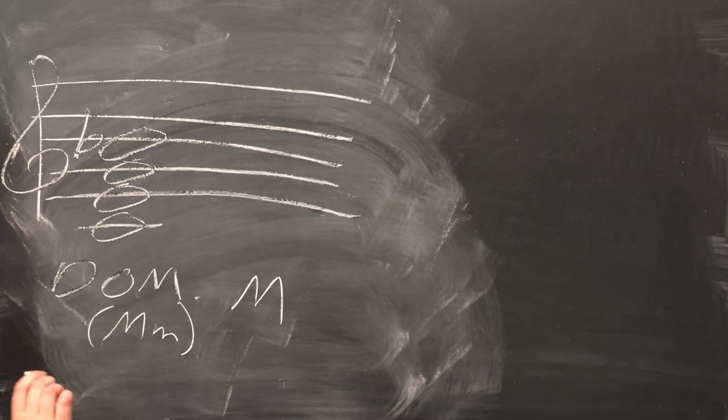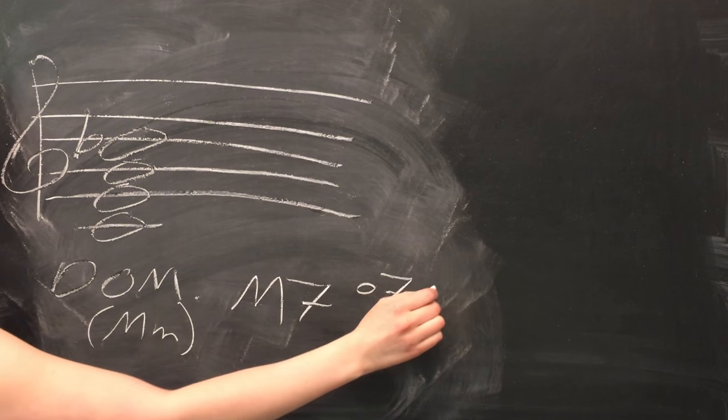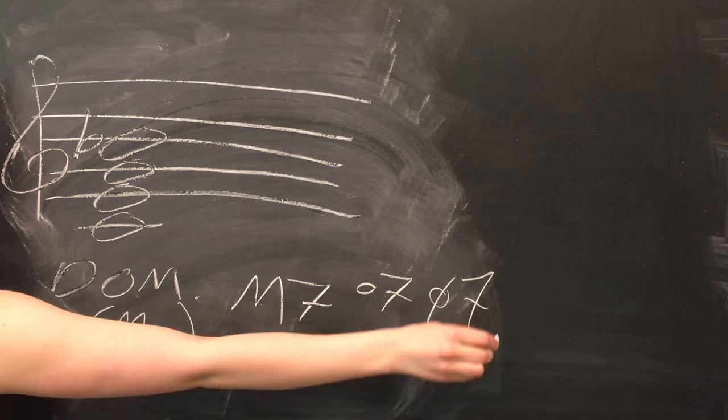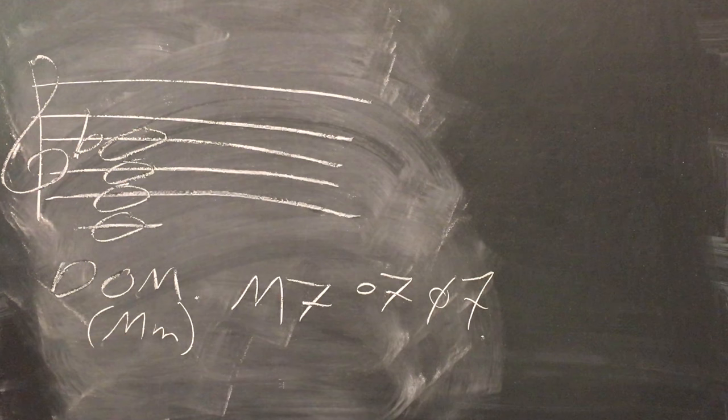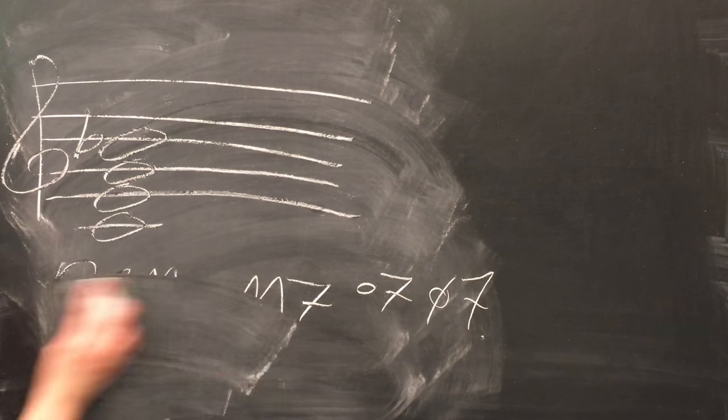The seventh chord you're probably most familiar with is the dominant seventh, which is a major triad with a minor third stacked on top for the seventh. In addition to the dominant seventh, we also have the major seventh, diminished seventh, and half-diminished seventh.